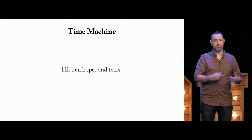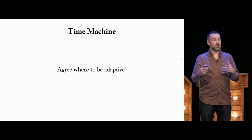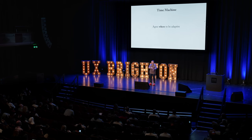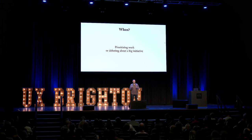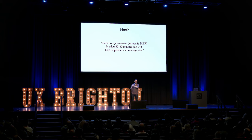With the Time Machine, we're surfacing hidden hopes and fears, and agreeing where we most need to be able to adapt. If our fears come true, we can act quickly; if they don't, we move on with confidence. You use this when prioritizing work or debating a big initiative. You sneak it in by calling it a pre-mortem — that framing is in Harvard Business Review, so people love it. It only takes 30 to 40 minutes, and it helps predict and manage risk. It's one of the only methods that opens the door in people's heads to say 'maybe we do need some research.'